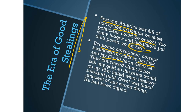Fisk and Gould convinced Ulysses S. Grant not to sell any gold so the price would go up. The plan failed when the Treasury released the gold by mistake. Grant was found innocent of any wrongdoing — he had been duped — but the economic consequences were staggering.